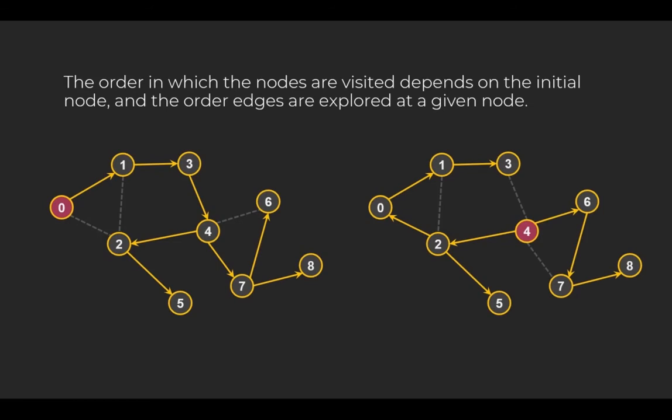As I said earlier, the order in which the nodes are visited depends on the initial node and the order edges are explored at a given node. Here are two examples of a graph traversal. On the left hand side, the starting point is vertex 0. And on the right hand side, the starting point is vertex 4.